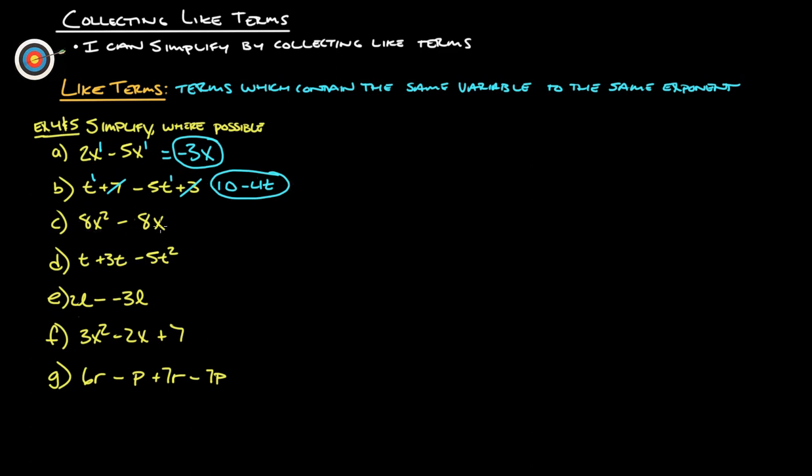8x squared minus 8x. Again, if there's no exponent there, it's to the first. These are the same variable, but they are not to the same exponent. So that's really as simplified as you can get.